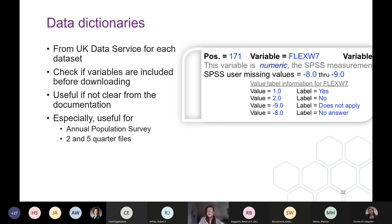The UKDS also produces data dictionaries, which can be found as part of the documentation. These detail all of the variables present in a particular dataset, and are really useful for checking whether the variables you want are actually present before you download the data. If your variable isn't in the data dictionary, it won't be in that version of the data. This is especially helpful for the longitudinal files and the APS, where it can be a little confusing in the documentation.